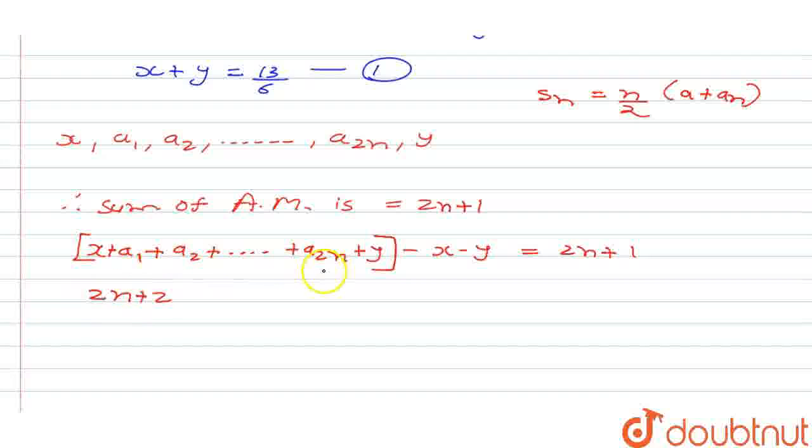2n for a1 to a2n, plus 2 is for x and y, divide by 2. Then a plus an, that is first term is x and last term is y. And we will take minus common here. So this is going to be x plus y equal to 2n plus 1.